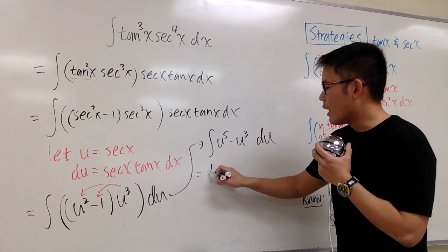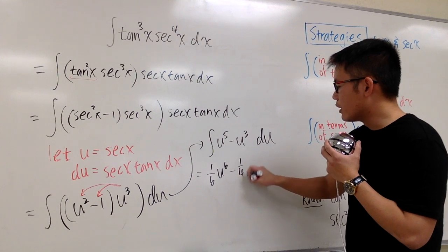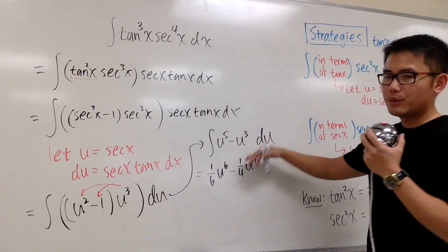So we will have 1 over 6, u to the 6th power, minus 1 over 4, u to the 4th power. Right? After we integrate that.